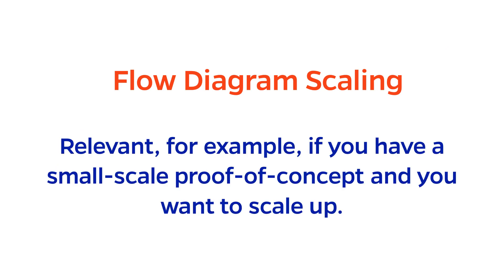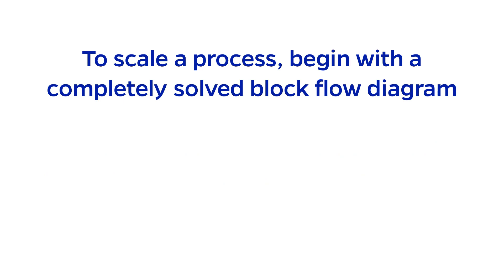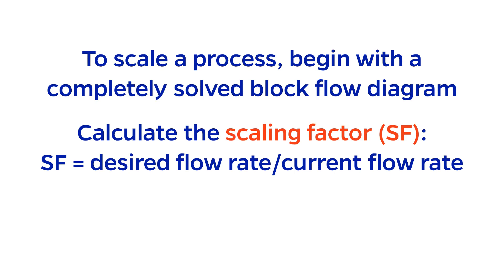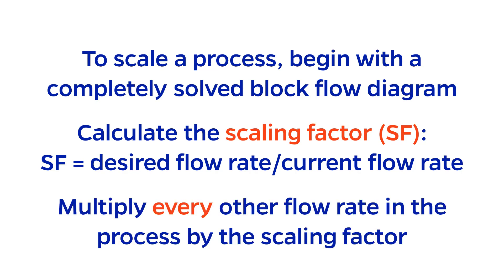An example of when this would be relevant is if a small scale proof of concept exists and you want to scale up the process to increase production. To scale a process, you have to start with a completely solved block flow diagram. You can then calculate the scaling factor by dividing the desired value of the flow rate by the current flow rate. Finally, multiply every other flow rate of the process by the same scaling factor.